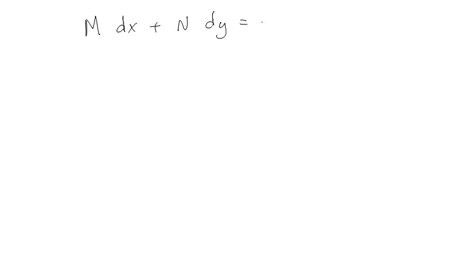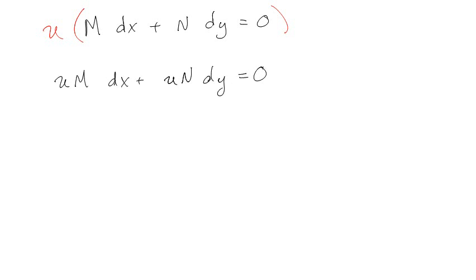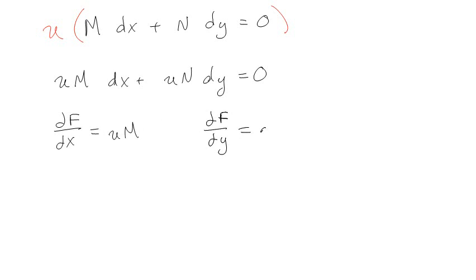Let's say that we have M dx + N dy = 0. We're going to magically multiply the whole thing by u, where u is a function of x. So we've got uM dx + uN dy = 0. We're going to assume that ∂f/∂x equals uM and that ∂f/∂y equals uN.